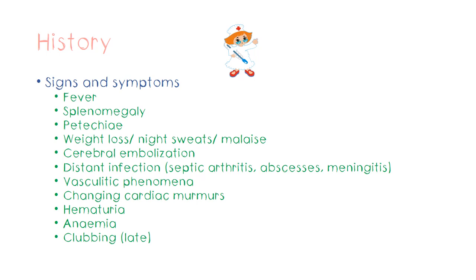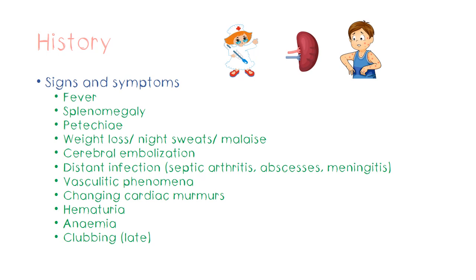The next sign is splenomegaly. The spleen is an organ in our abdomen concerned with immune function and degradation of cells. In infective endocarditis you can get congestion of this organ, which can cause its enlargement. Other causes for splenomegaly include abscess formation, infarction, and related edema. Another sign is petechiae — a rash on the skin with small red patches often less than one millimeter, a feature of endovascular phenomena seen in this condition.